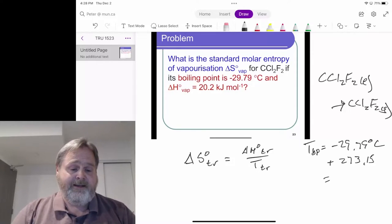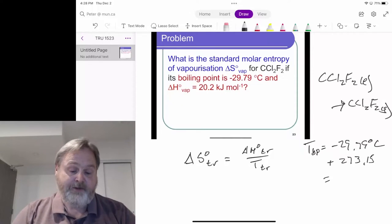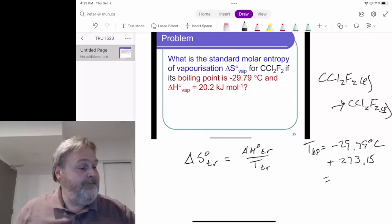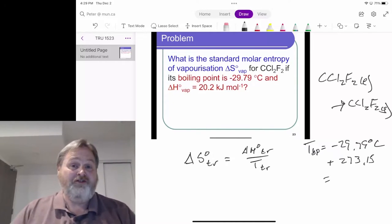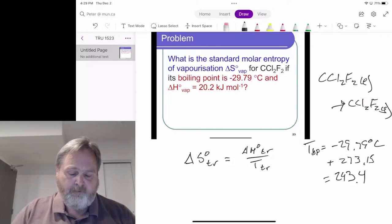Let me do that calculation. That's 273.15 minus 29.79, which gives us a transition temperature, in this case a boiling point temperature, of 243.4 Kelvin.